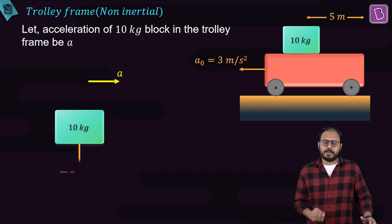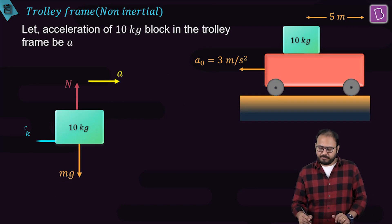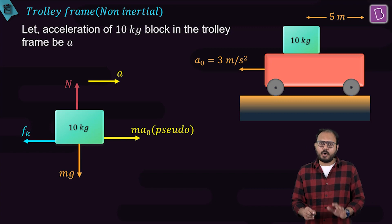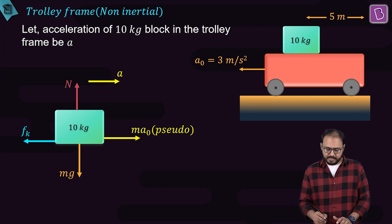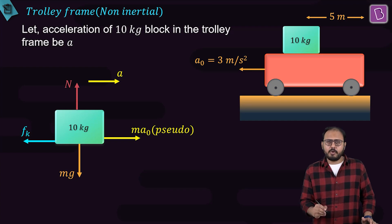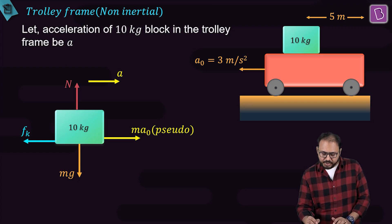Let's go in the trolley frame. The observer stands on the trolley and looks at the 10 kg block. Always start with your strength. First, the weight mg, the normal reaction. Pseudoforce - why? Because the trolley has an acceleration. So there is a pseudoforce to the right-hand side, and the friction.